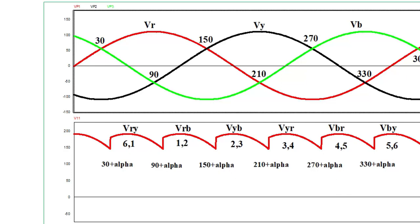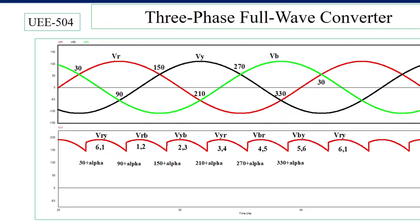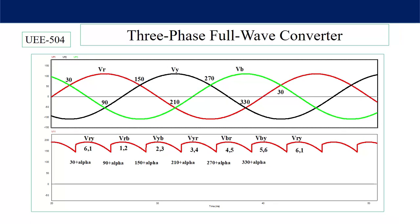From 30+α to 90+α when thyristors 6 and 1 are on, the output voltage is the difference between two supply voltages — Vr and Vy — so the output voltage is Vry. When thyristors 1 and 2 are on (90+α to 150+α) the output voltage is Vrb. Then for pairs 2-3 the output is Vyb; for 3-4 it is Vyr; for 4-5 it is Vbr; for 5-6 it is Vby; and 6-1 gives Vry again.